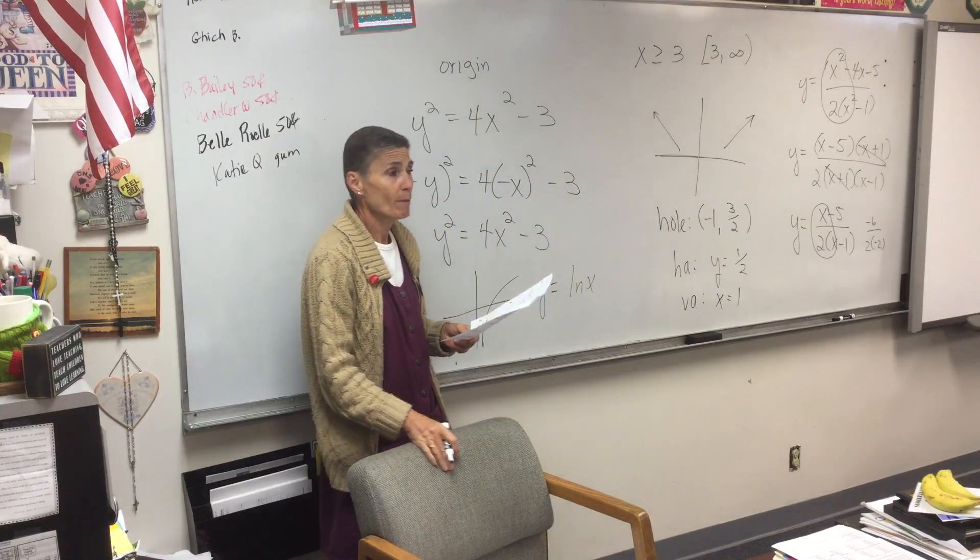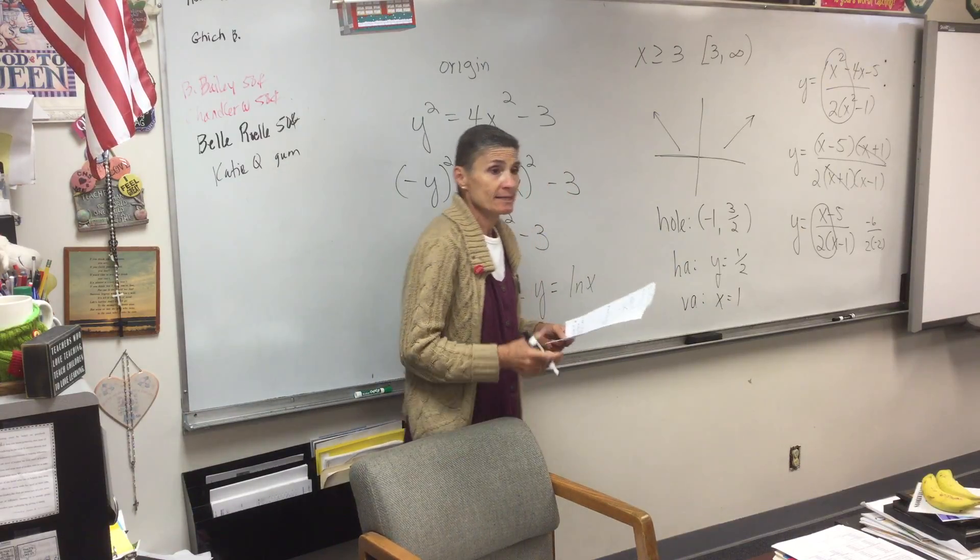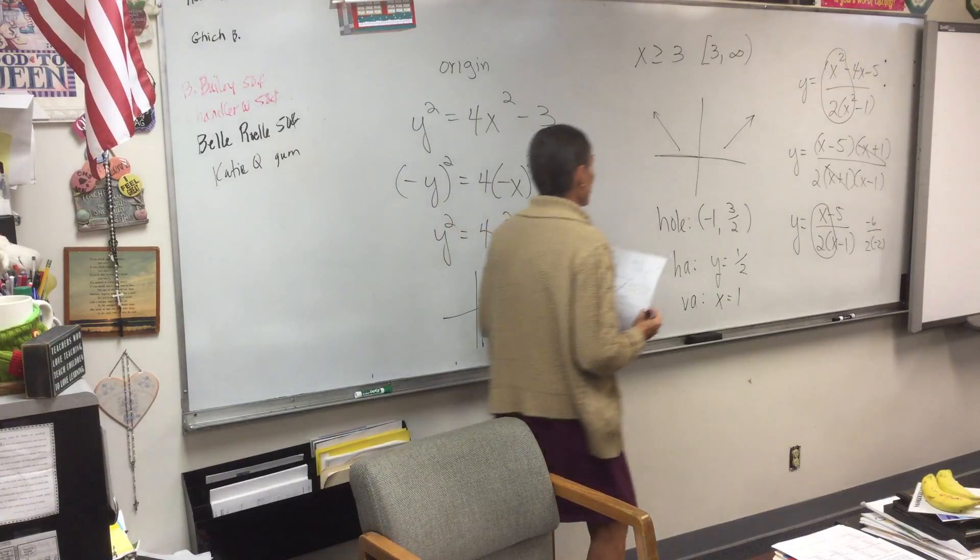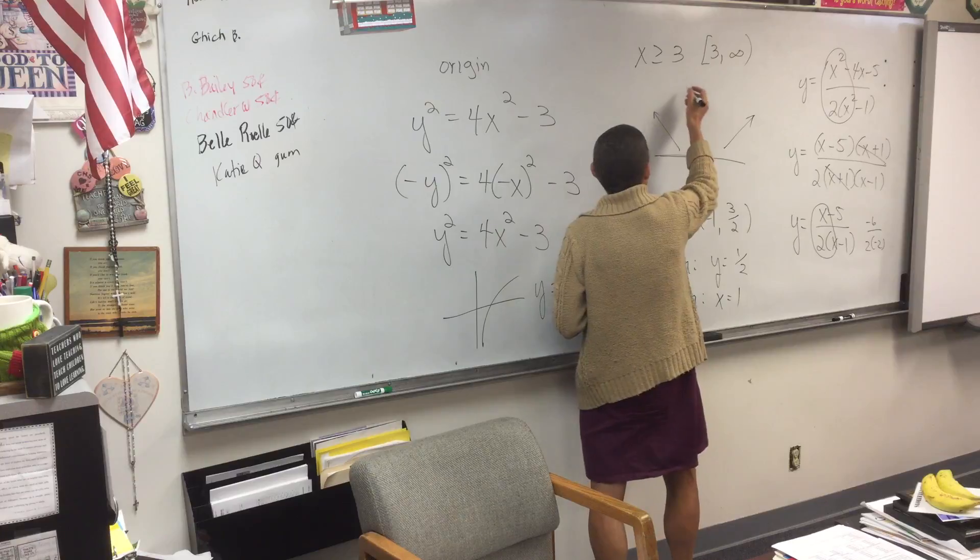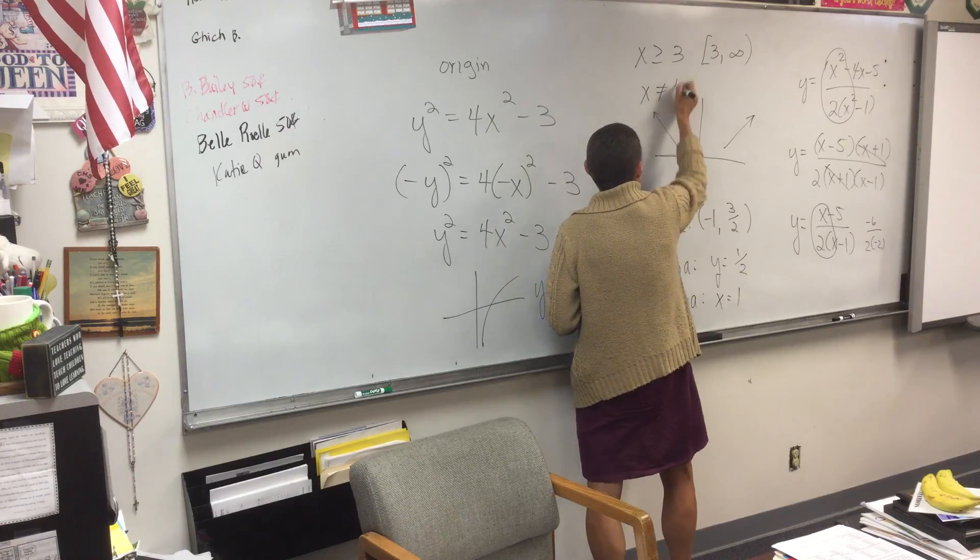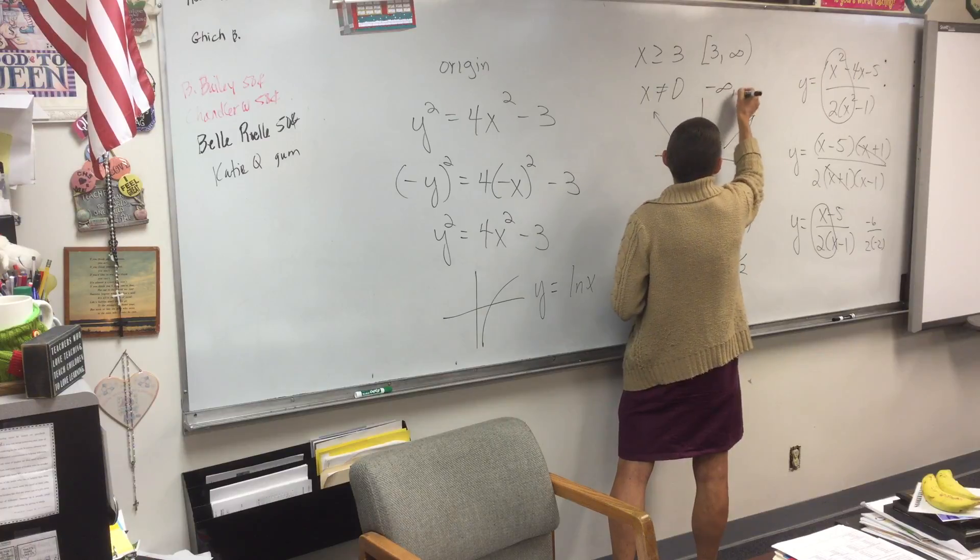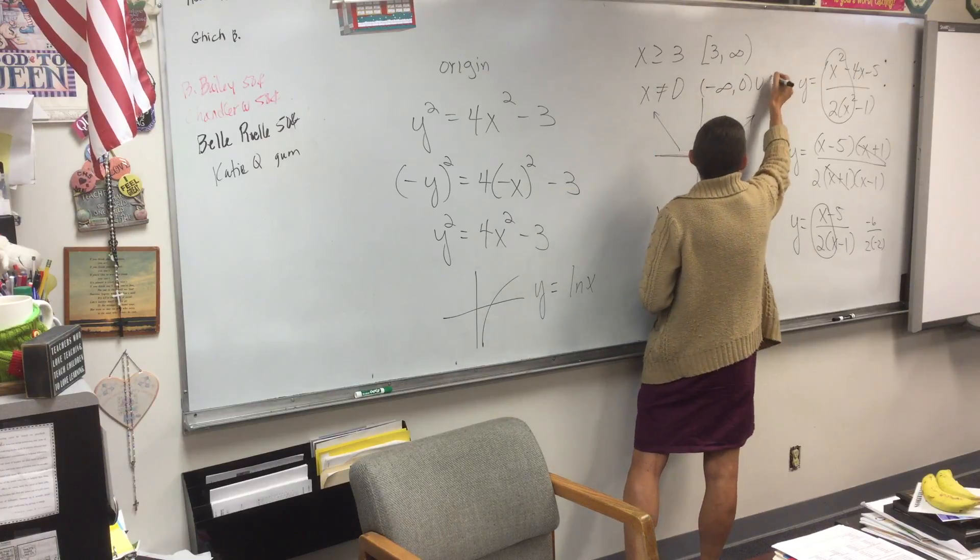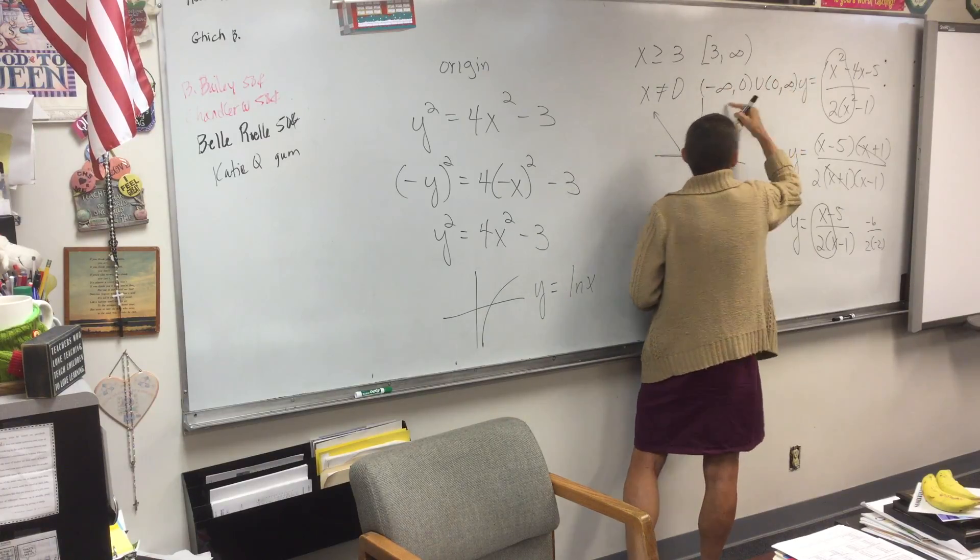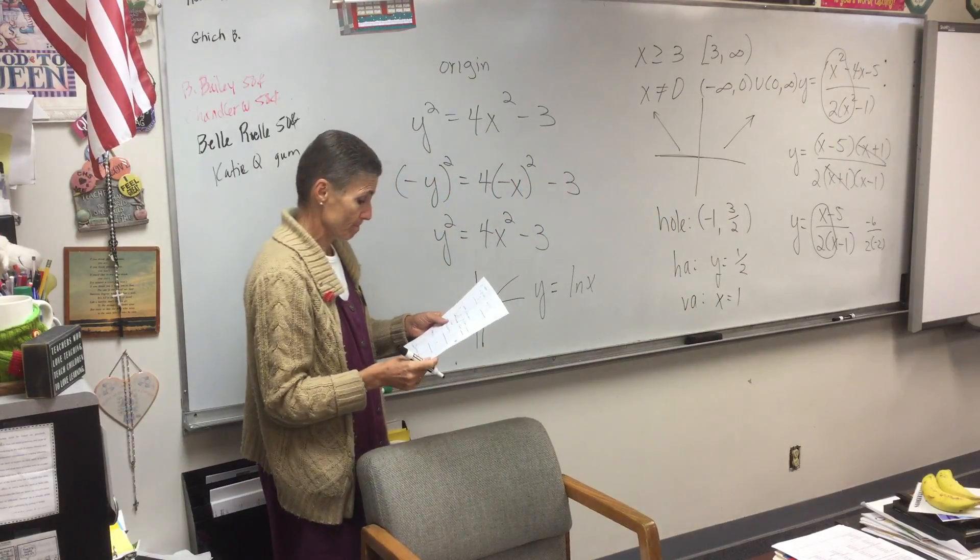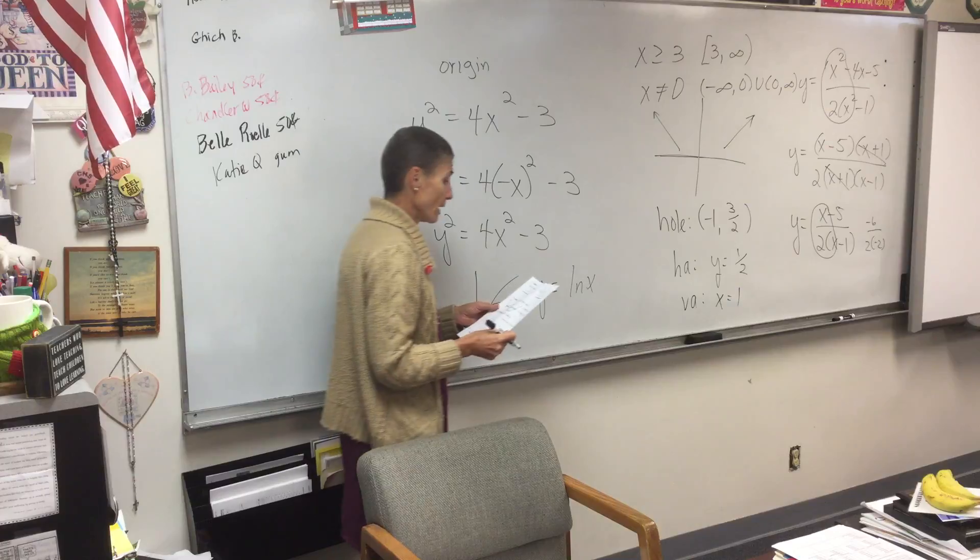How about B? What's your domain? X cannot be zero. Because you don't want a zero in the bottom. So, you can either write X cannot be zero, or you can be really mathematical and say everything from negative infinity to zero, or everything from zero to infinity.